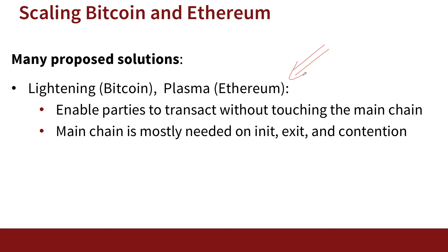The idea is that when you initialize a virtual chain, or when you exit from it, or when there's a problem or disagreement between parties, that's when you need to hit the main chain. But in most cases where the system works without problems and people just issue transactions, most transactions happen peer-to-peer and never touch the main chain. If you want to read more about how this works, you can look up the Lightning Network — it's quite easy to understand. Plasma is also a quite beautiful design. The approach is simply to touch the main chain as little as possible.